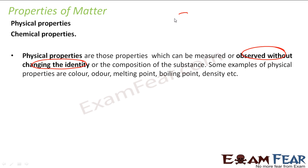For example, if I have a ball, just by looking at it I can tell the color. I can tell the smell by smelling it. I can tell the melting point, the boiling point, and I can measure the density — because I'm not changing the identity of the ball for any of these. Those properties are called physical properties.